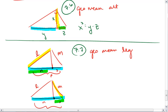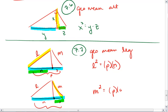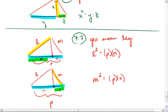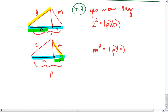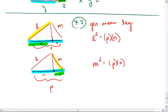Where the leg squared equals the entire hypotenuse times the closest part of the hypotenuse. That's it.